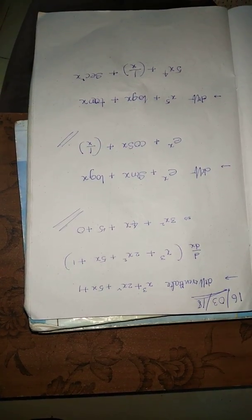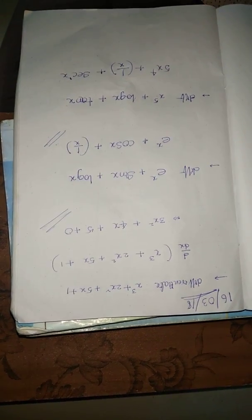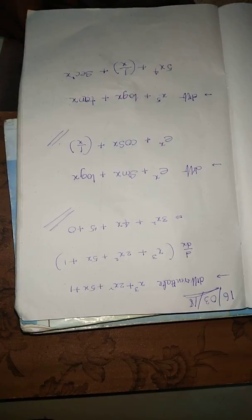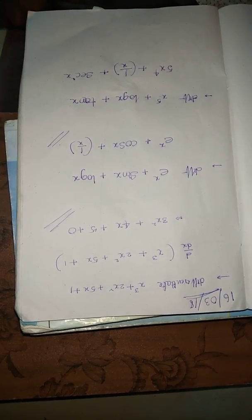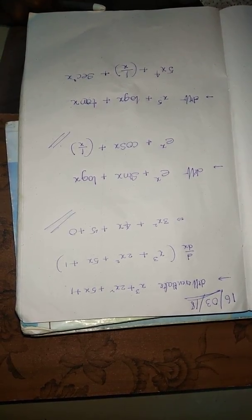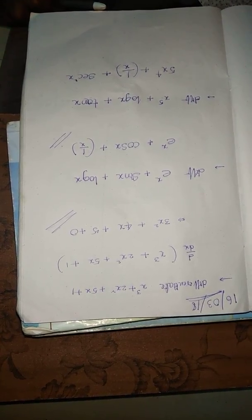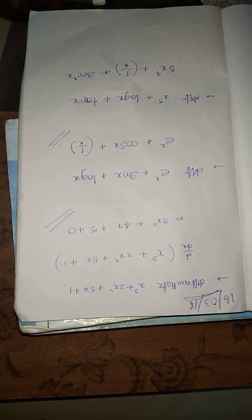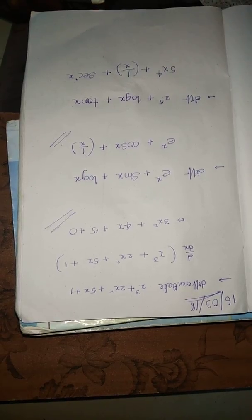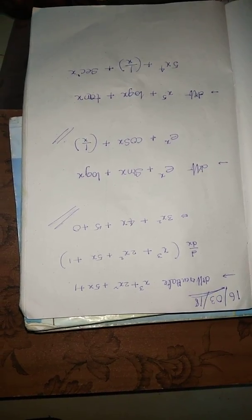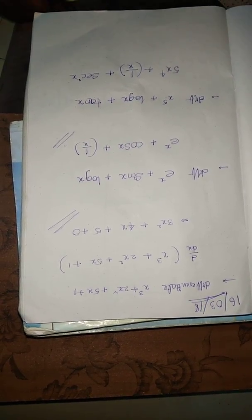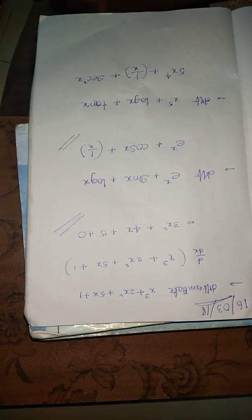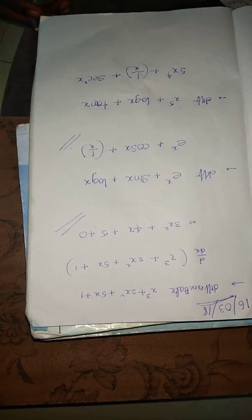M1 Engineering Maths, M1 for Diploma. What is the main topic? Differentiation. Minimum 6 to 7 questions are asked. Differentiation is compulsory, differentiation is very easy. Partial differentiation is very easy.